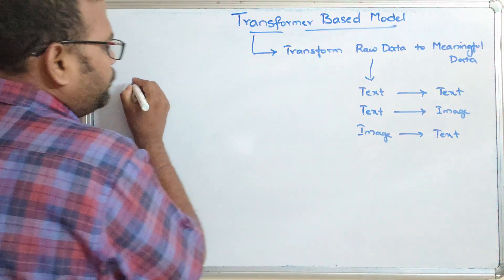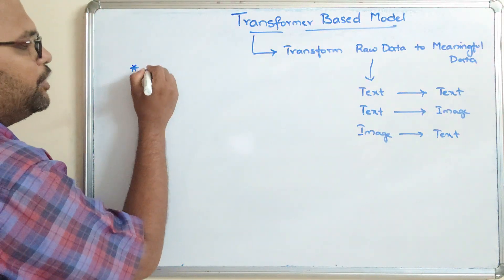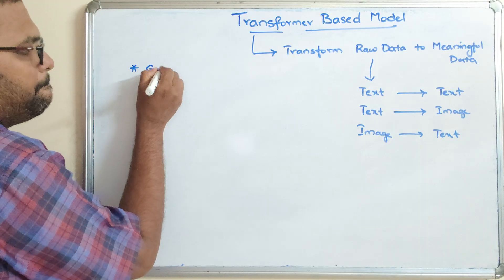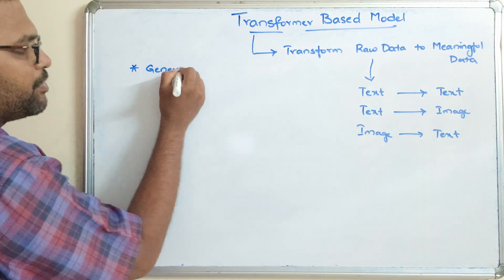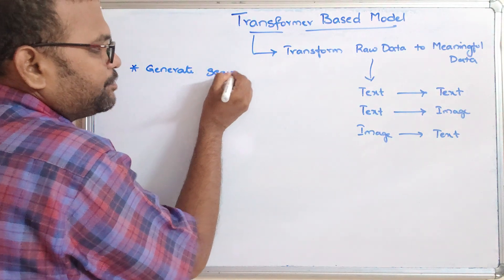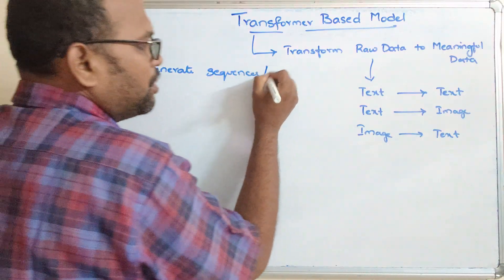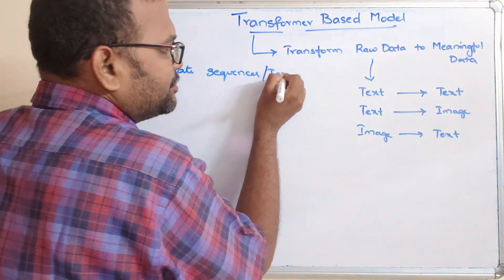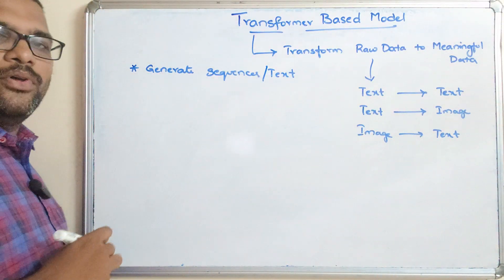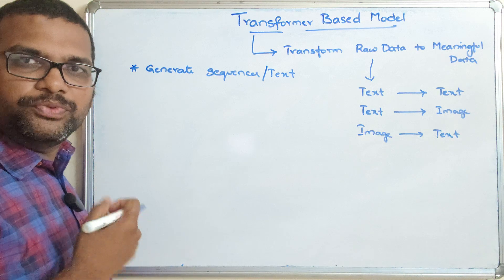This transformer-based model is mainly used to generate sequences or text from the prompt which we are giving.